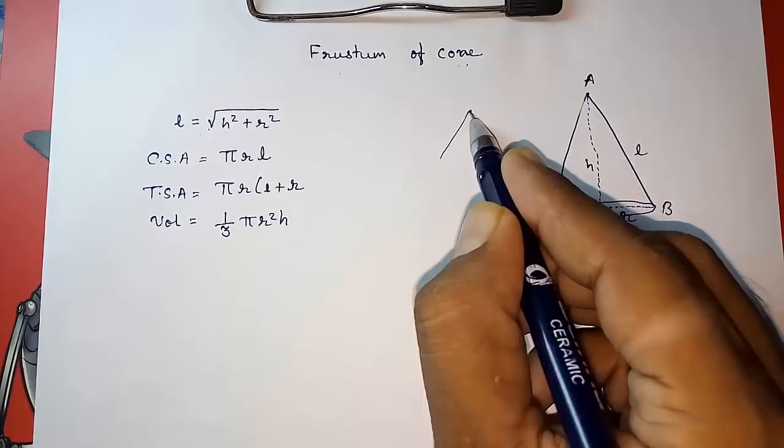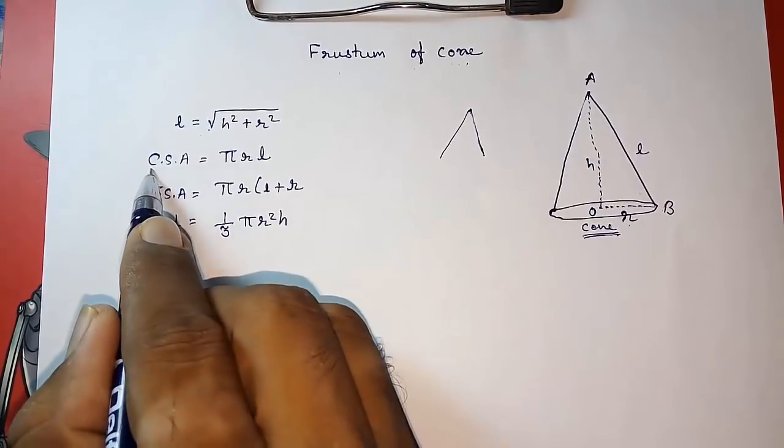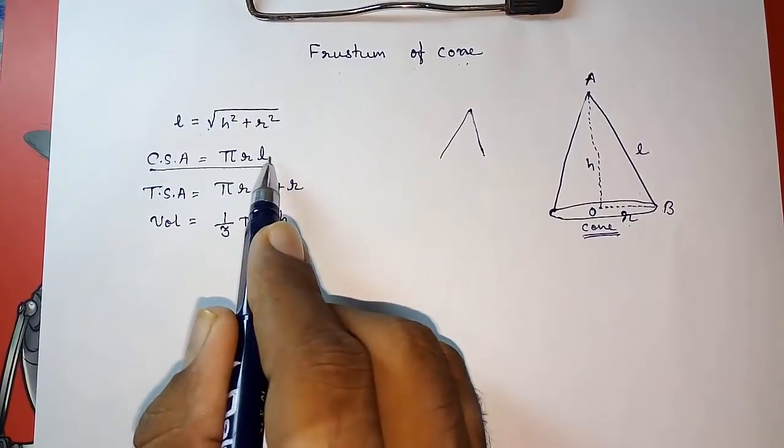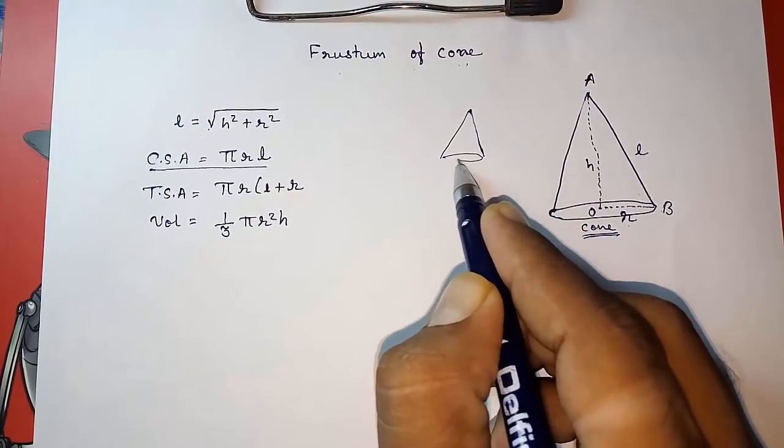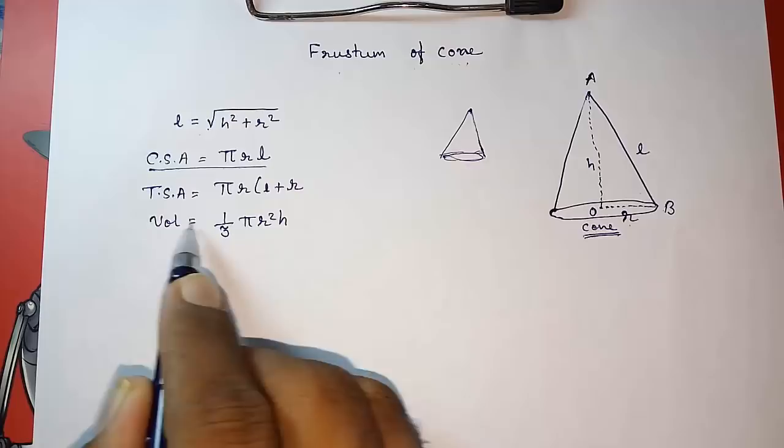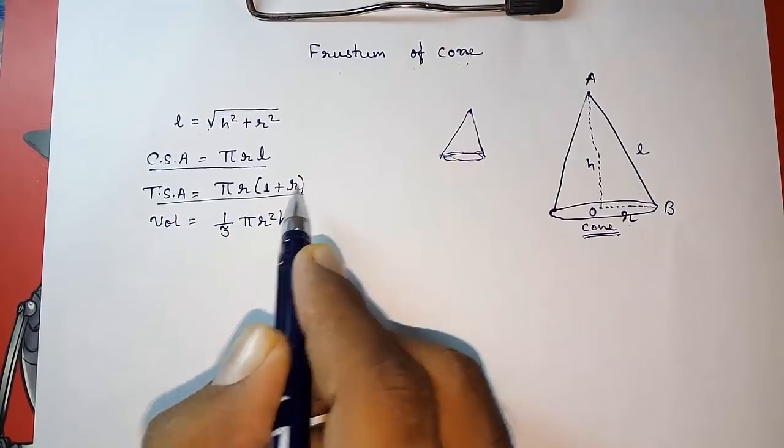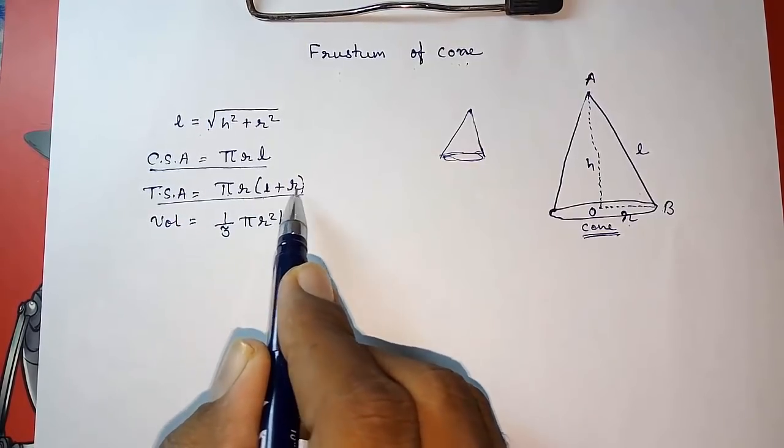If you want to find only the curved surface area, this surface area without base, you have to find pi r L. If you want to find total surface area, that is this plus base, at that time it's pi r into bracket L plus r.